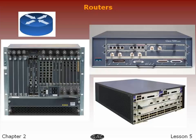A router has two stages of operation called planes: the control plane and the forwarding plane. In the control plane, a router records the routing table listing what route should be used to forward the data packet and through which physical interface connections, using internal pre-configured addresses called static routes. In the forwarding plane, the router forwards the data packets between incoming and outgoing interface connections, routing them to the correct network type using information that the packet header contains, based on data recorded in the routing table.